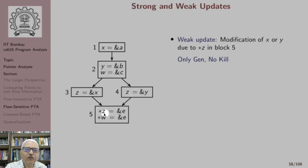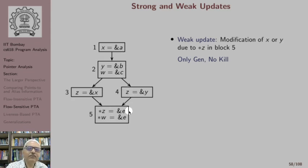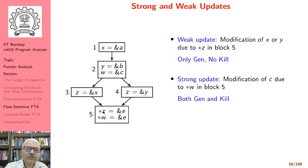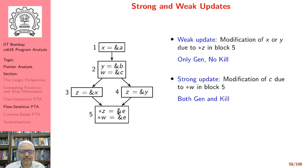Along path 1-2-4, y is modified and made to point to e whereas x continues to point to a. The question is: because we have x pointing to e, should we remove the previous pointee of x? Since we cannot be sure which path is taken, because of star z we cannot remove the previous pointee of x and y. So this is called a weak update.